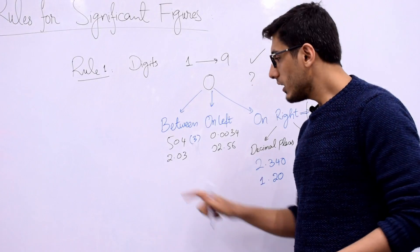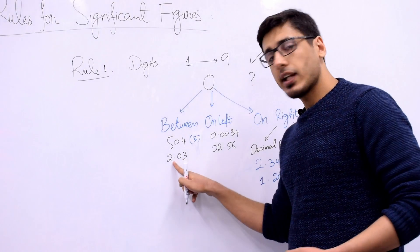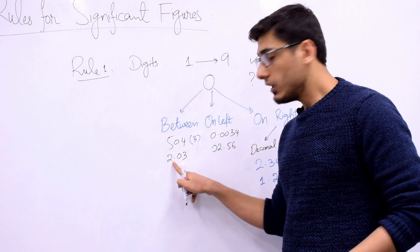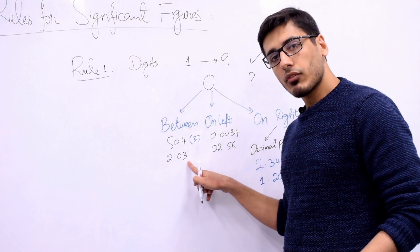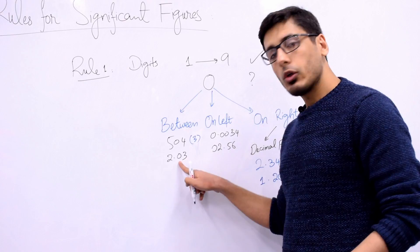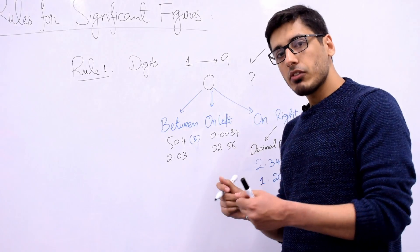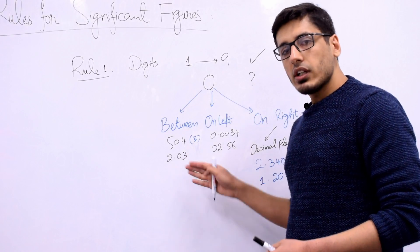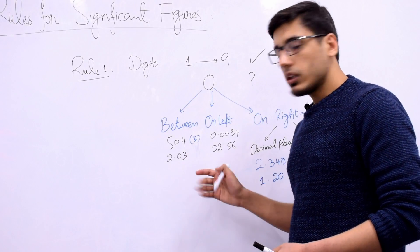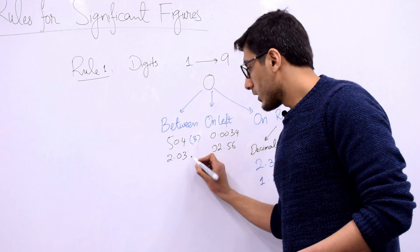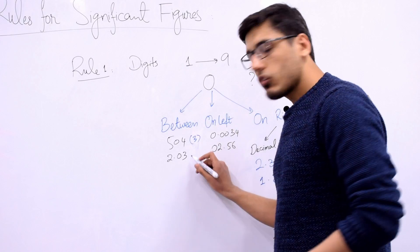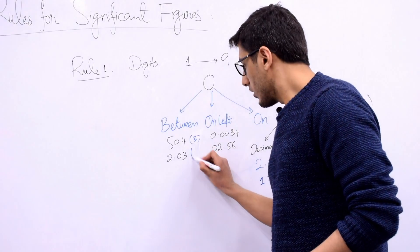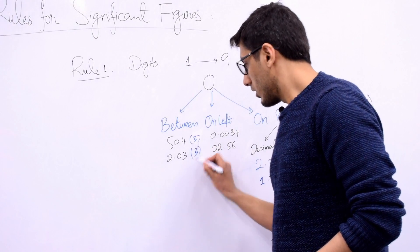Similarly, even if you have a decimal place involved, since two and three are both significant figures and zero is sandwiched in between, all three digits will be considered significant. Again, the number of significant figures in this reading is 3.